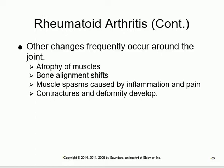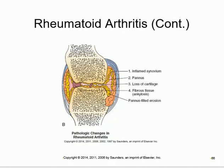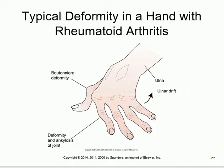Deformities and contractures occur later in rheumatoid arthritis. The key distinction: rheumatoid arthritis affects small joints (like fingers) and is bilateral, while osteoarthritis affects big joints (like knee) and is also bilateral. In RA, joints are stiff, red, swollen, and painful. Remember: stiff, red, swollen, painful - these are the hallmarks.